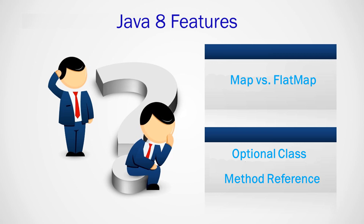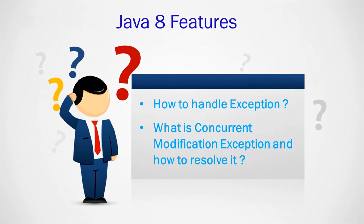Exception handling in Java is done using try-catch blocks. All risky code is placed in the try block, and the respective exceptions are handled in the catch block. The child class exception should appear before the parent class exception when writing the catch hierarchy.